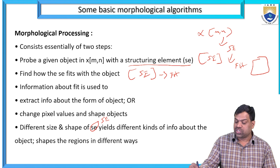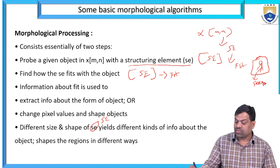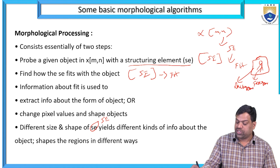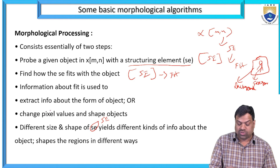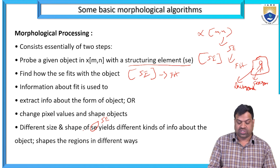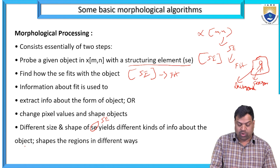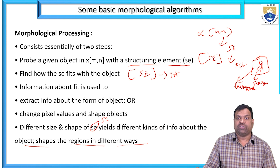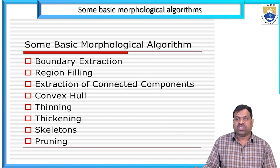When we are going to the object — is it fit to the object or not? Foreground and background are there. Is the object fit to the original image or not? The information is used to extract information about the form of the object, change pixel values, shape objects, and different sizes and shapes of SE yield different kinds of information about object shapes and regions in different ways.